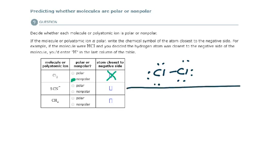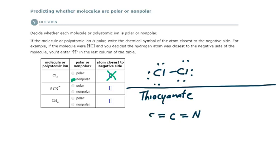For the next part of this problem, we have the ion thiocyanate. If we were going to draw its Lewis structure and double-checked formal charges, what it would look like would be this. And of course it is an ion.